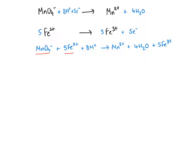We know that the manganate was in the burette, so the volume of that is going to be our average titre, which was 35.55 cm³. We know that the concentration of that was 0.02 mol dm⁻³, and we know we've pipetted 25 cm³ of our standard solution of iron, but we don't know what the concentration is. The only one we've got enough information to work anything out about is the manganate, so that's where we're going to start.